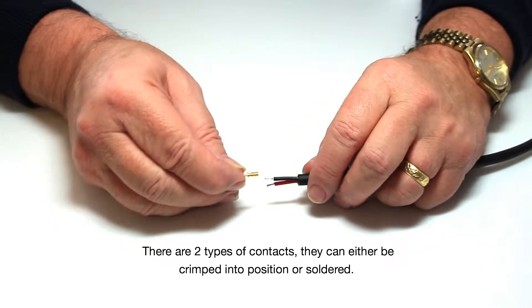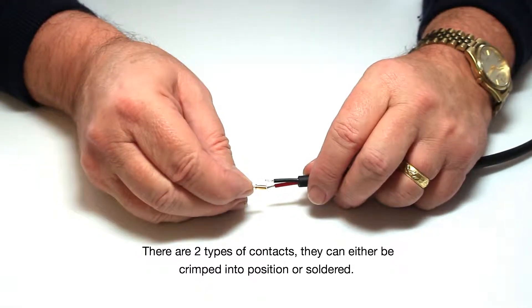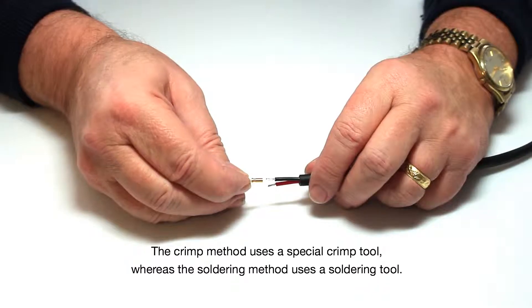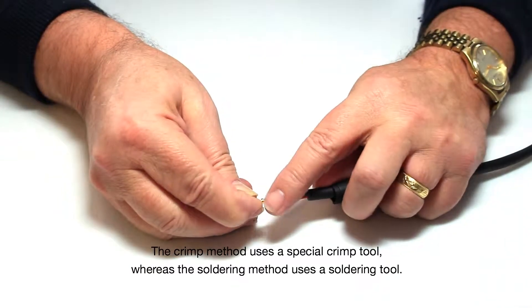There are two types of contacts. They can either be crimped into position or soldered. The crimp method uses a special crimp tool, whereas the soldering method uses a soldering tool.